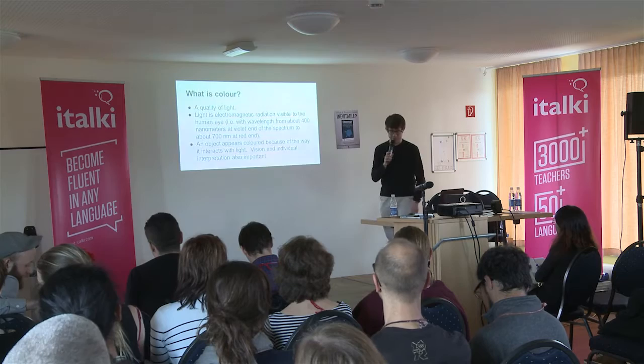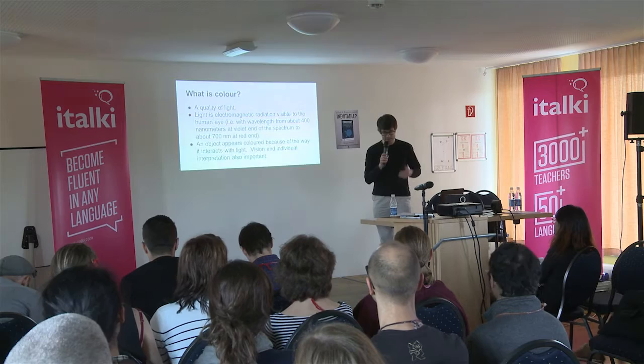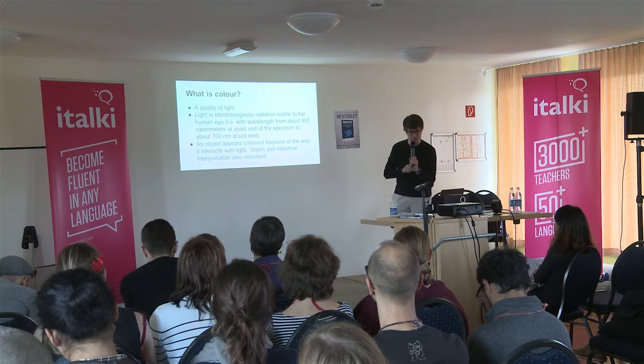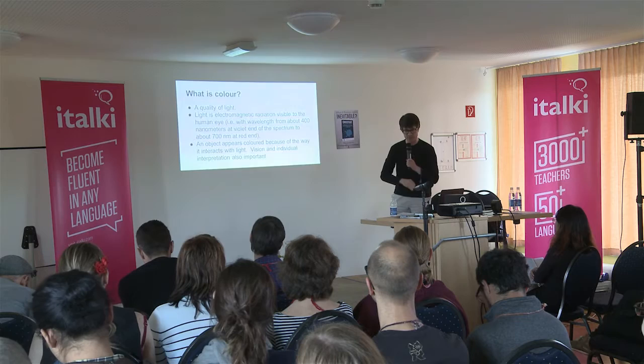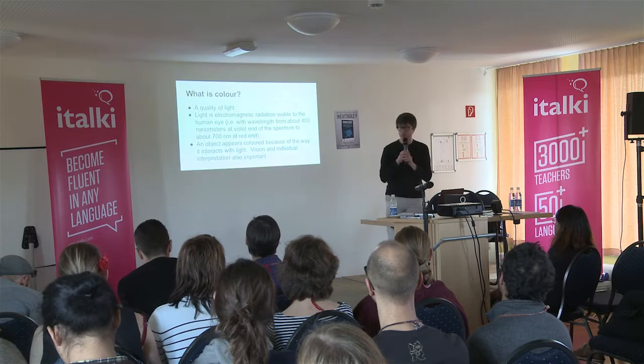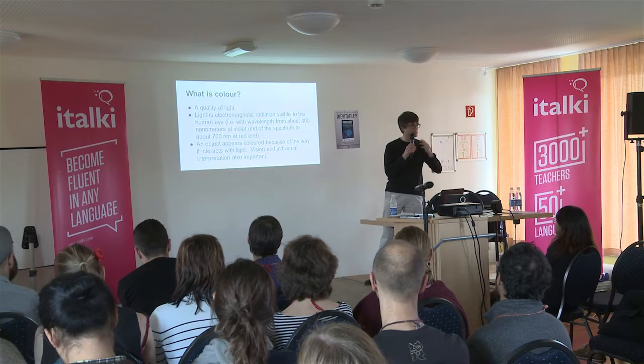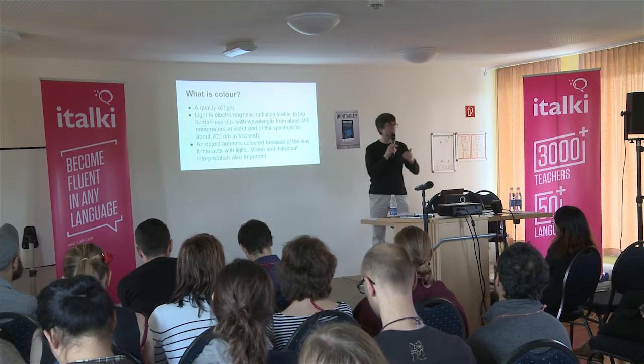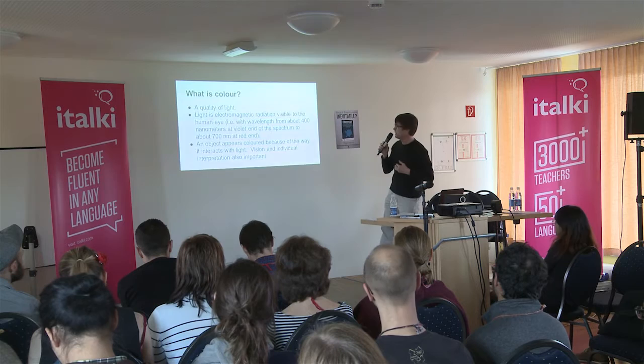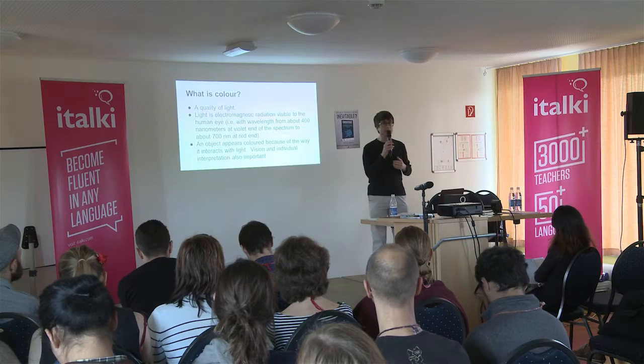So what is color? This is where it gets physics-y — I'll go through this quickly. It's a quality of light, electromagnetic radiation visible to the human eye. At one end of the spectrum you've got infrared, and at the other end ultraviolet that we can't see beyond the rainbow. Objects appear colored because of the way they interact with light — it's not just the physics of the object but also our own human vision. Your dog sees things differently; they can see better in the dark.